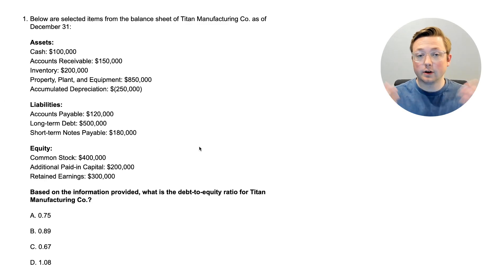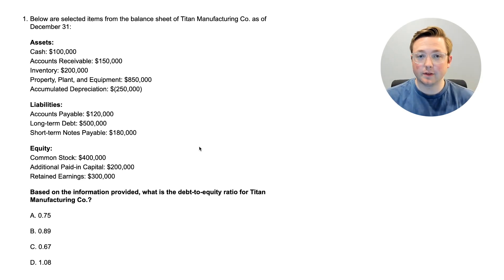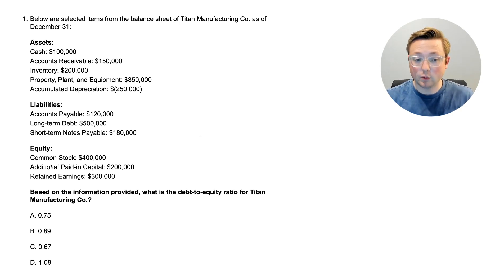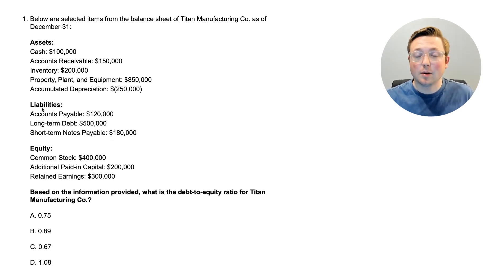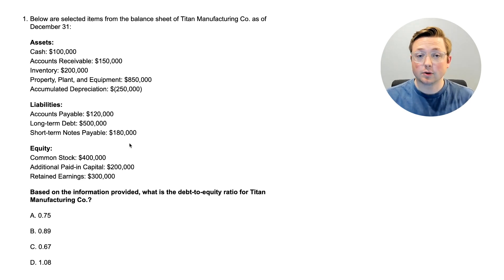With all this information we need to figure out the debt-to-equity ratio. Just with the name of that ratio, you can probably guess that you're focusing on equity and debt — usually that's the liabilities — so it's probably something to do with liabilities and equity. If you don't know how to do this, that's okay. We're going to go straight to the answer to learn what the debt-to-equity ratio is and how to calculate it.